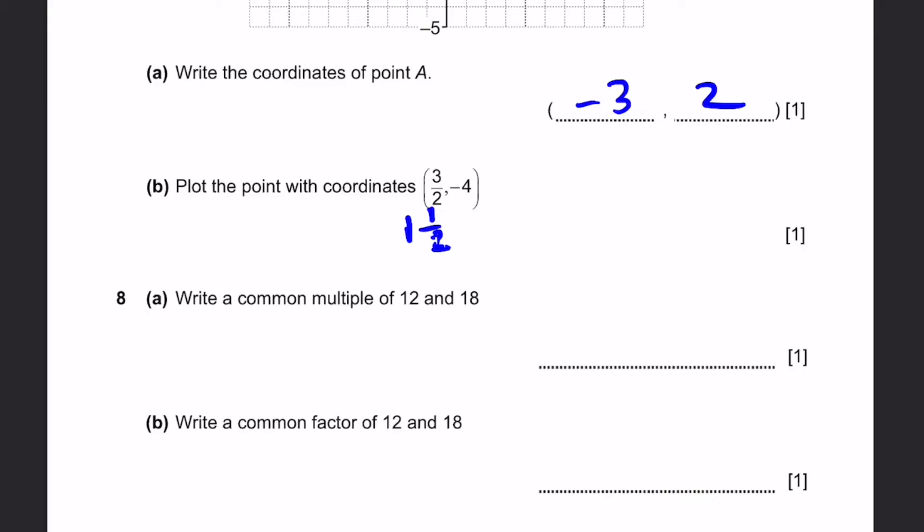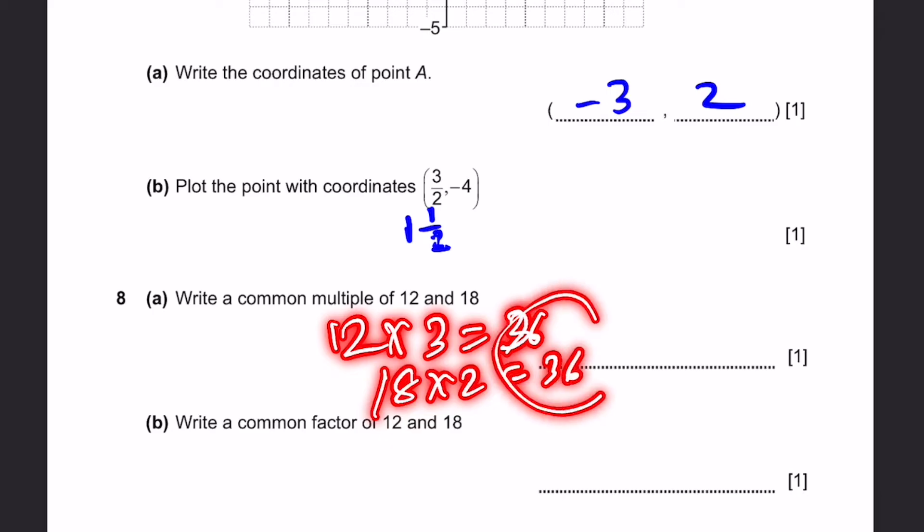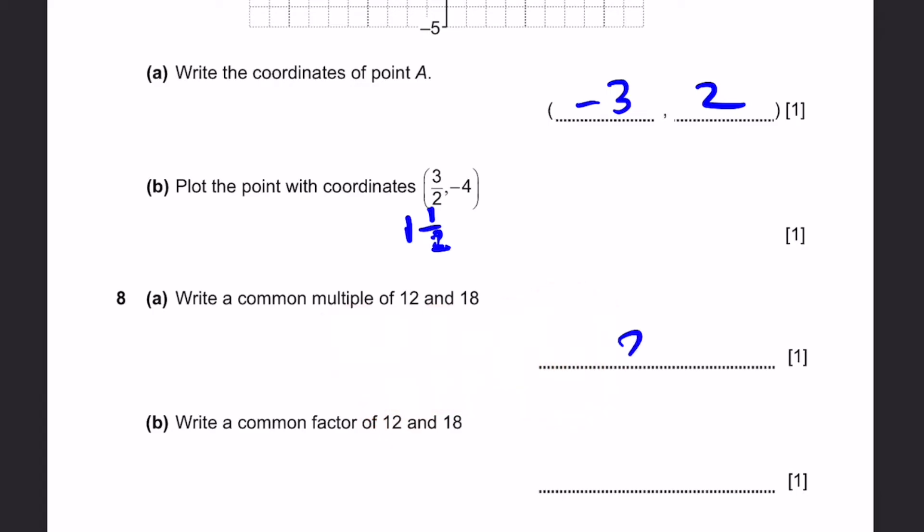Question 8. Part A, write a common multiple of 12 and 18. If you realize it, 12 times 3 equals 36, and 18 times 2 is also equal to 36, so you can write 36 as a common multiple. There's actually a few more, for example, 72, 108, 144, and the list goes on. There's many different common multiples, actually you can say infinite common multiples of these two. If you write any one of them, it's correct.